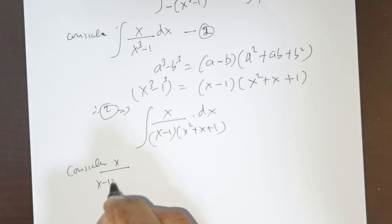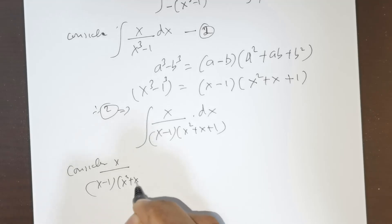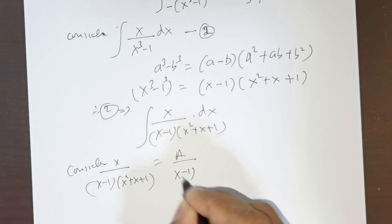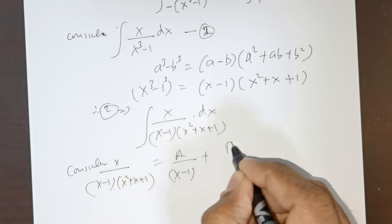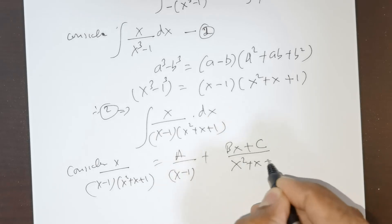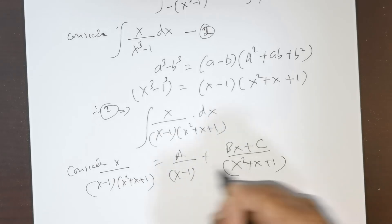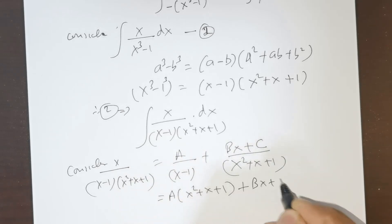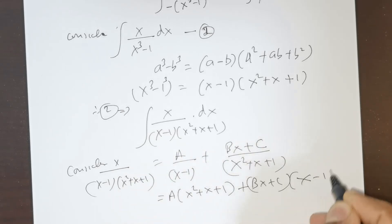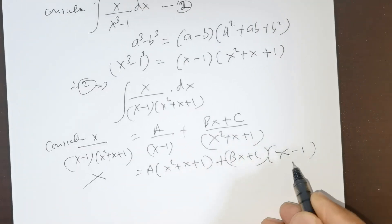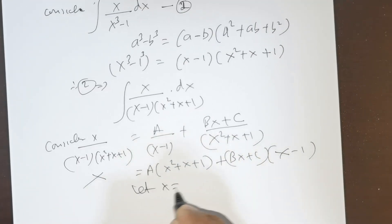Now consider x over (x minus 1)(x² plus x plus 1). I'm going to utilize partial fractions: A over (x minus 1) plus, since the degree is 2, Bx plus C divided by x² plus x plus 1. Cross-multiplying gives A(x² plus x plus 1) plus (Bx plus C)(x minus 1) equals x.